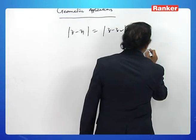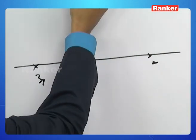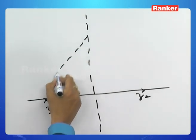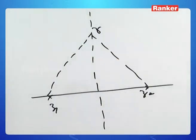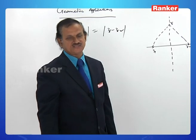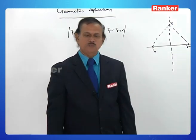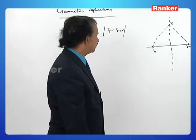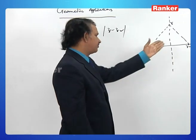Observe the diagram. Let z1 and z2 be two fixed complex numbers. The distance from z to z1 is |z - z1| and the distance from z to z2 is |z - z2|. Since these two distances are equal, z moves at an equal distance from z1 and z2. This is just the perpendicular bisector of the segment joining z1 and z2.